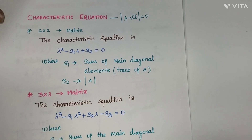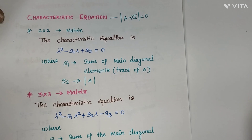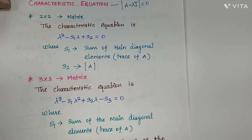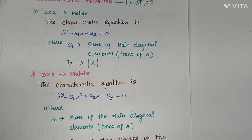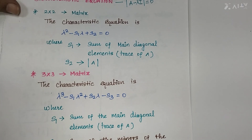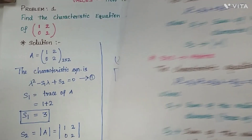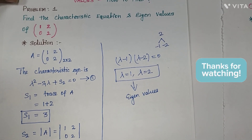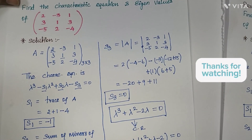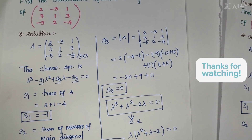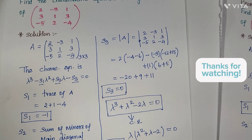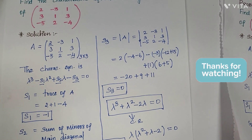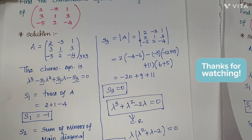In this video we have seen how to form a characteristic equation based on a given matrix. We have two models — the 2×2 matrix and the 3×3 matrix — for forming the characteristic equation. Based on these, we solved two problems: one for a 2×2 matrix and another for a 3×3 matrix. Together we completed how to form the characteristic equation and how to find eigenvalues. Thank you.